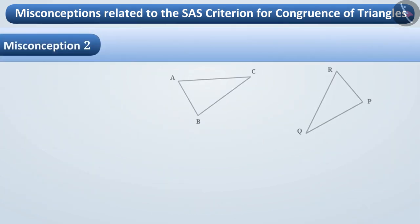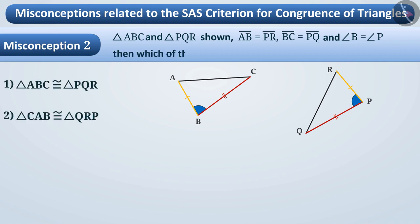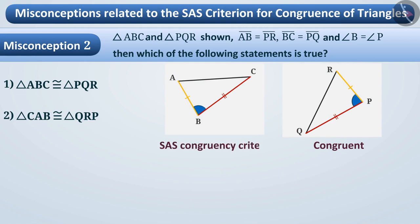Misconception 2: In triangle ABC and triangle PQR, AB is equal to PR, BC is equal to PQ, and angle B is equal to angle P. Then which of the following statements is true? Children see that the two triangles have corresponding sides and the angle between them equal, so they think that the given triangles are congruent by the SAS congruency criteria. But they don't correctly name the triangles as per the criteria of congruency.